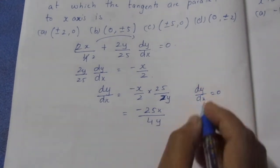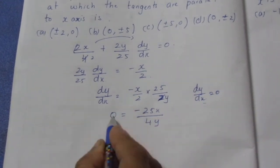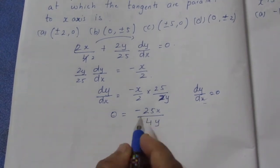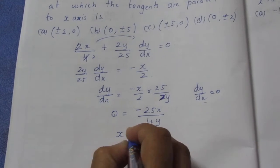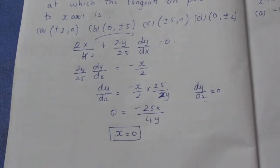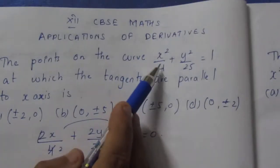As slope is equal to 0, this becomes 0, and if I take this to the side it comes as 0. So -25x = 0 and x will be equal to 0. So we know that x is equal to 0. Substitute the x value in the equation.